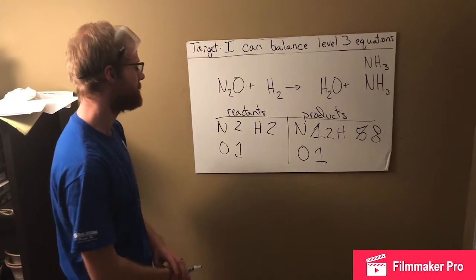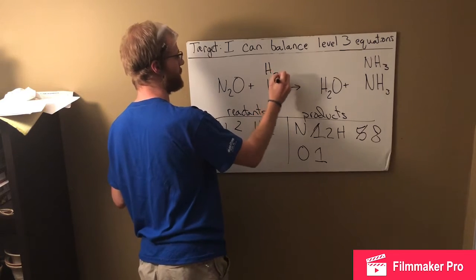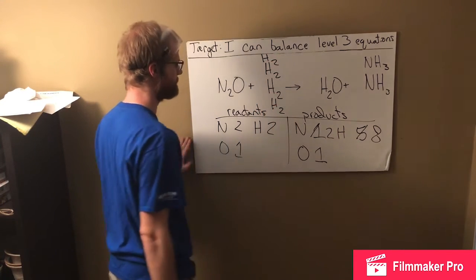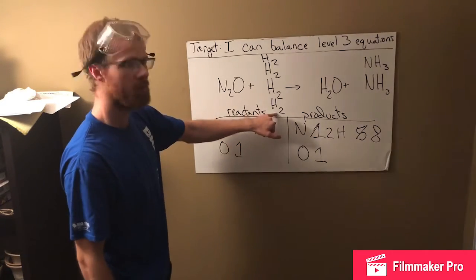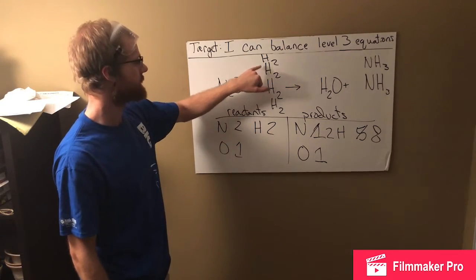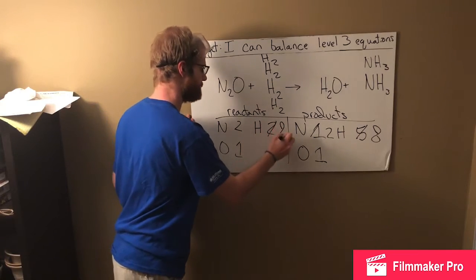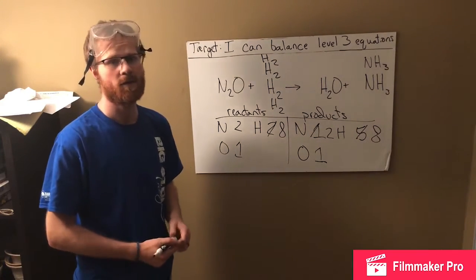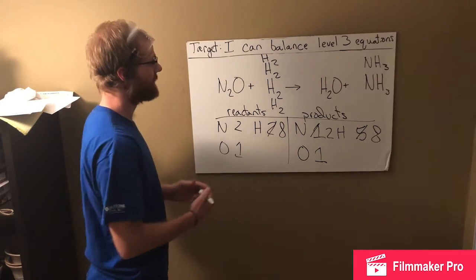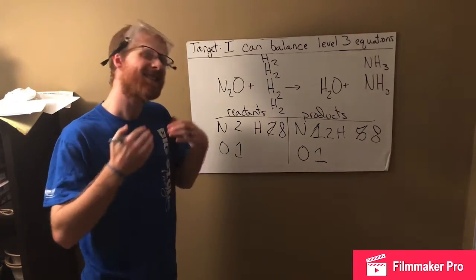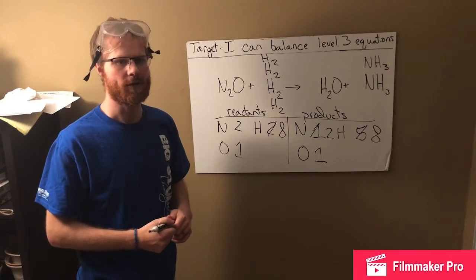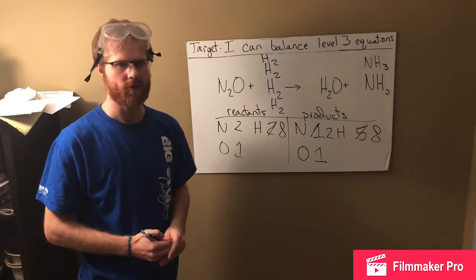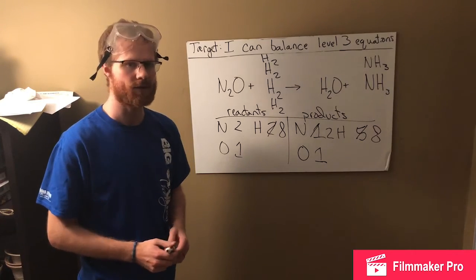So if I need to get eight hydrogen on both sides of this equation, how am I going to do that? Well, pretty straightforward. I'm just going to add more H2. Okay. So I've got one, two, three, four, five, six, seven, eight hydrogen. Ta-da. Balanced equation, right? These problems don't have to be super difficult. They're just a little bit harder than the level two equations. Okay. I'm going to give you guys a slightly more challenging problem to try on your own first, and then I'll go over it with you to make sure that it's right.